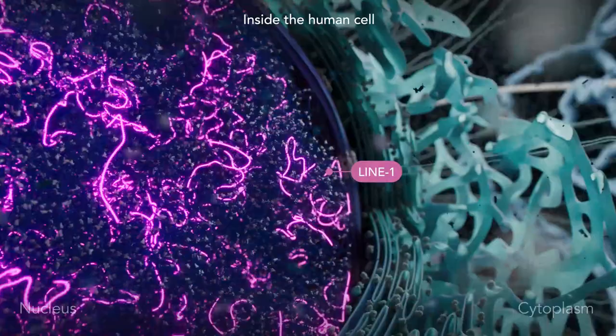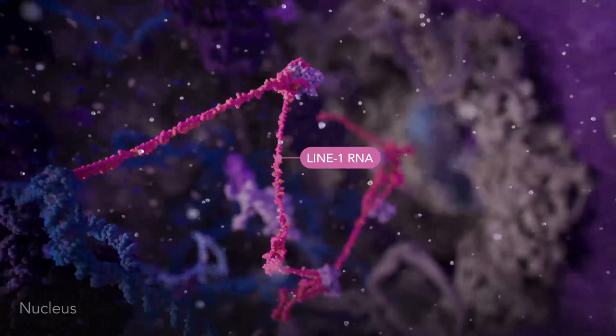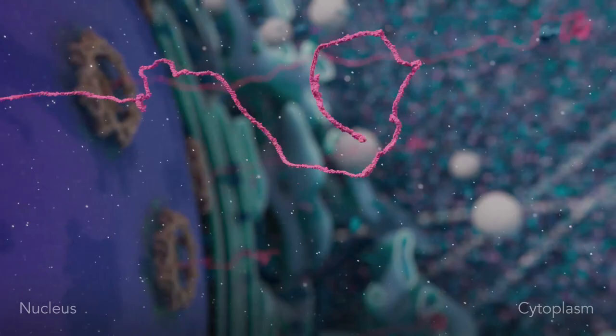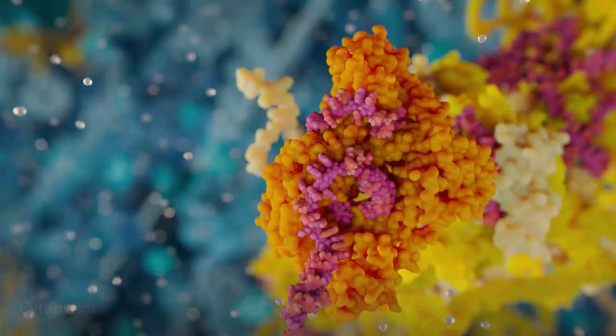The human genome contains approximately half a million copies of a virus-like element known as LINE-1. In certain disease states, LINE-1 escapes repression and generates RNA molecules that migrate to the cytosol.